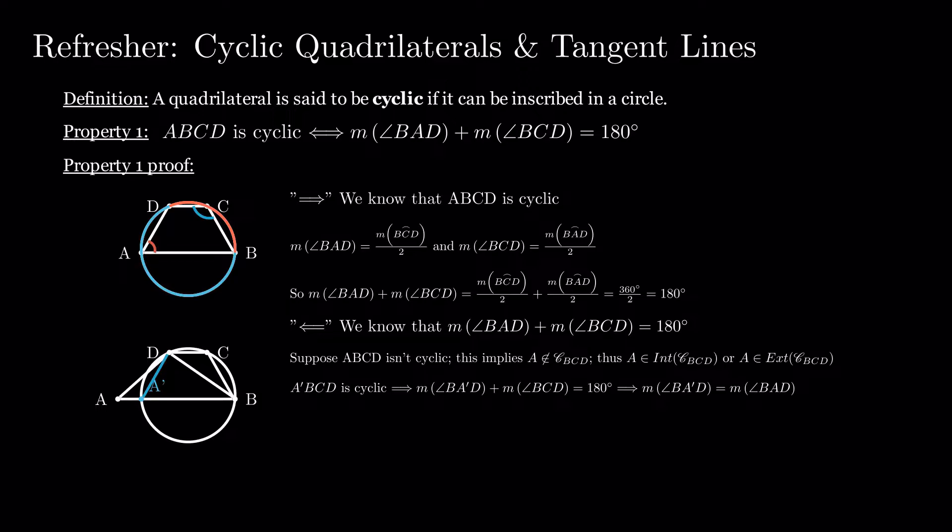However, looking in triangles BDA and BDA prime, applying the property of the sum of angles and replacing BAD with BA prime D, we have BDA prime equals BDA. This is a contradiction, so our initial supposition is false, meaning that ABCD is cyclic. Note that this drawing was used as a guideline and the proof would work the same way, regardless if A is inside the circle or outside of it.